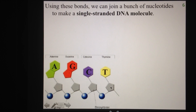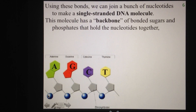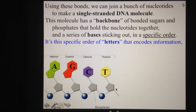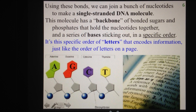This single-stranded DNA molecule has a backbone made up of sugars and phosphates bonded together — phosphate to sugar, to phosphate to sugar — basically making one long chain that holds the nucleotides together. There's also a series of bases that stick out the side of this chain in a very specific order. It is this specific order of these letters that encodes our genetic information, pretty much just like the letters on a page — the order they come in tells us different information.